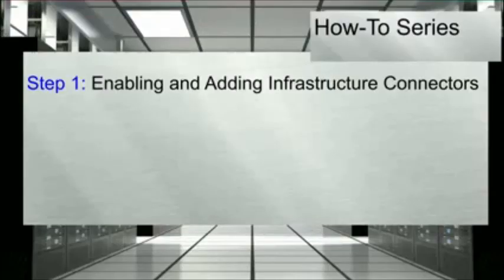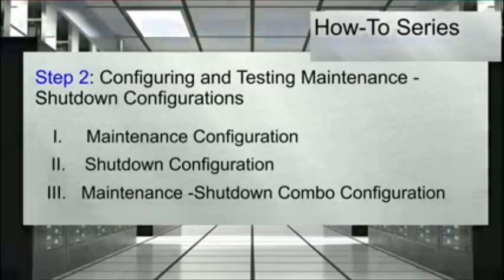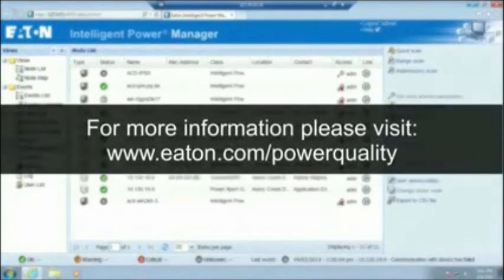In this video, we have reviewed enabling and adding infrastructure connectors as well as configuring three modes of escalation to be utilized during a power event. For more information, please visit our website at eaton.com/power-quality.